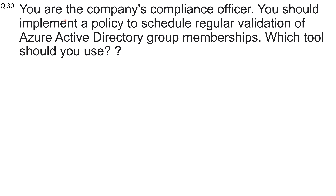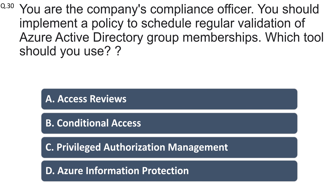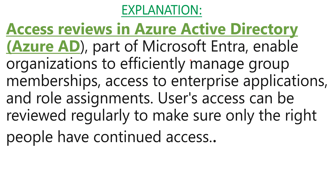Question number thirty: you are the company's compliance officer and need to implement a policy to schedule regular validation of Azure Active Directory group memberships. Which tool should you use? Options: access reviews, conditional access, privileged authorization management, or Azure Information Protection. The right answer is access reviews. Access reviews, part of Microsoft Entra, enable organizations to efficiently manage group memberships and ensure only the right people have continued access.